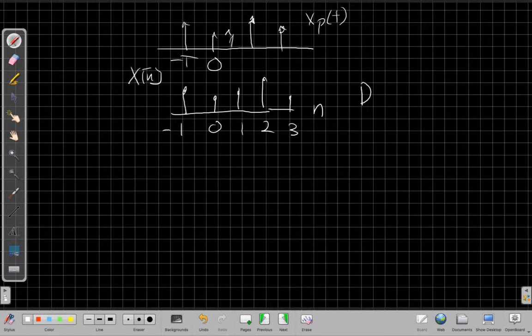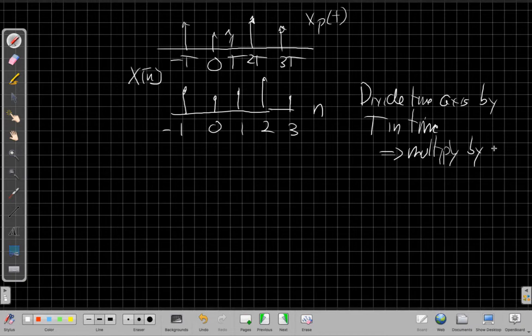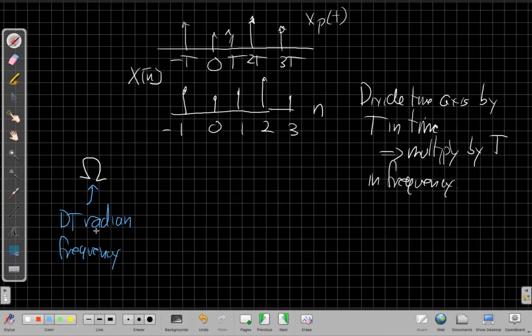And so if we divide the time axis by T in time, it turns out we're going to multiply by T in frequency. And just for this chapter, unfortunately, we use a different discrete time symbol. We have two omegas because we need to keep discrete time frequency separate from continuous. So this is our discrete time radian frequency, since we have both characters appearing in the same film here.